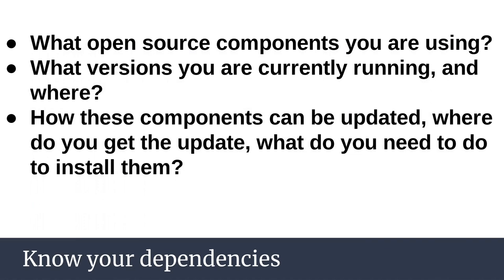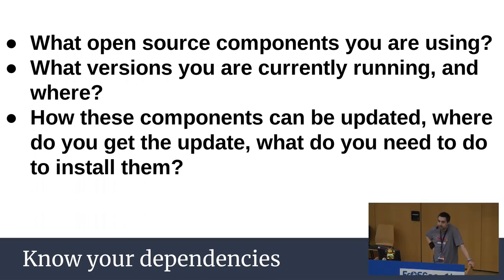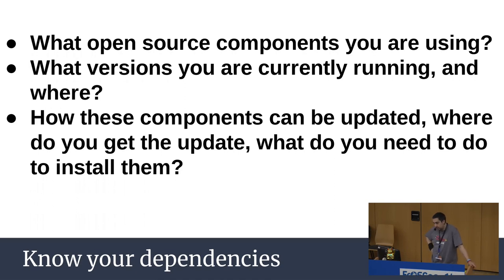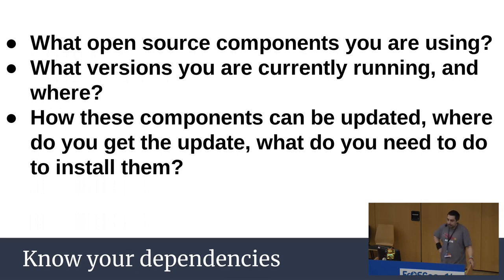When working with open source projects, using external dependencies is very useful. In order to start a security evaluation, you need to answer these questions: What open source components are you using? What versions are you currently running and where? How can these components become outdated and where do you get updates? What do you need to do to install them? These questions form the basis for understanding the state of the open source project, especially where security is critical.